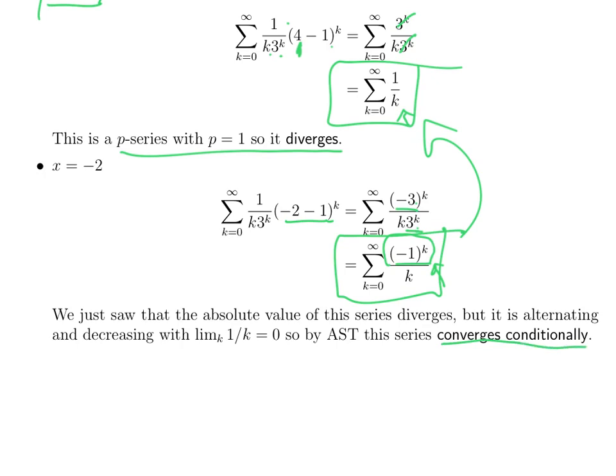The actual interval is minus 2 to 4. The interval includes minus 2, because the series converges conditionally there, and excludes 4, because the series diverges there. That is our final answer.